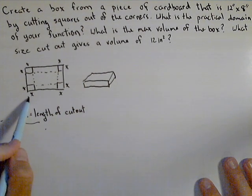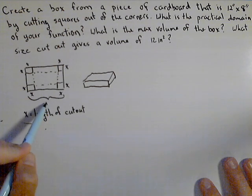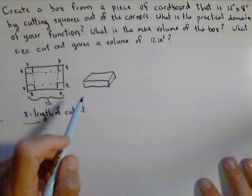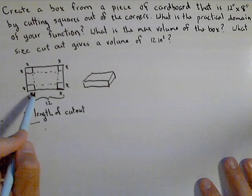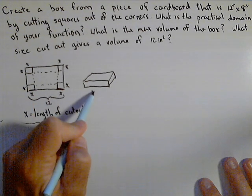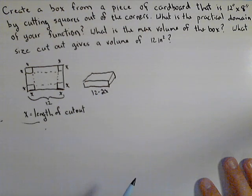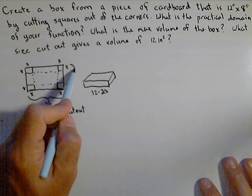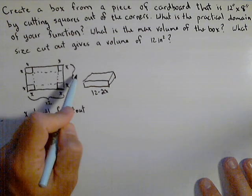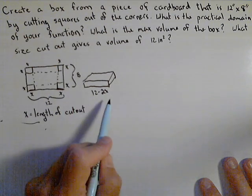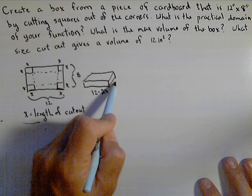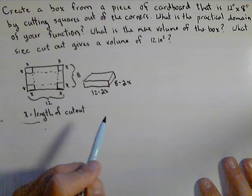Well, this long side originally was 12 inches, but notice that we're taking x and x away. So this side is now 12 minus the two x's. Over here, this was originally 8 inches. We're taking two x's away, so this side is 8 minus 2x.